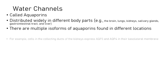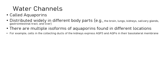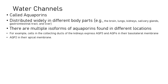For example, in the collecting ducts of the kidneys, you have aquaporin-3 and aquaporin-4 found on the basolateral part of the membrane, and aquaporin-2 found on the apical part of the membrane. These aquaporins allow for reabsorption of water or secretion of water into the lumen.